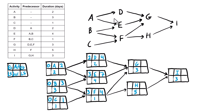Activity G has three predecessors, so we take the largest early finish of all of those. We have four, seven, or four — seven is the largest, so we bring it in, and seven plus three is ten. Activity H has only one predecessor, so we bring that value straight in: four, and four plus five gives us nine. For activity I, we take the largest of ten and nine, so we bring in ten, add the duration, and the early finish of activity I is thirteen.